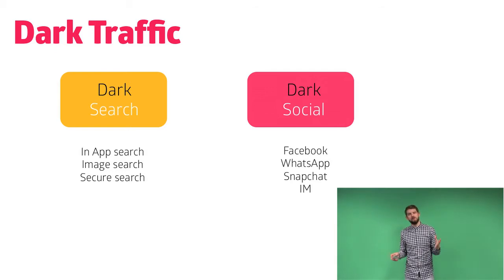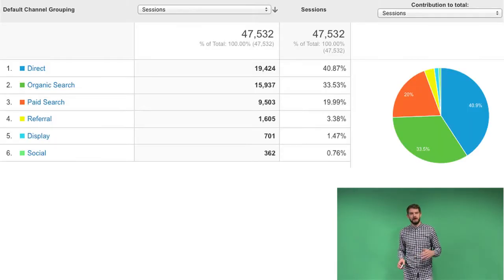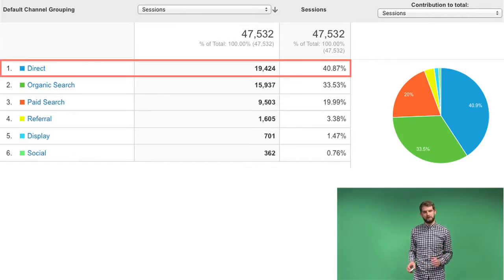So what does Google Analytics do when it doesn't know how to attribute traffic? Well, it lumps it all in here and calls it direct traffic.